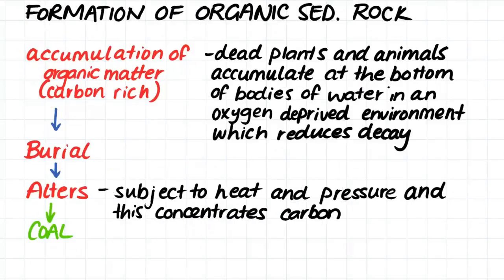Now to look at organic sedimentary rock. Organic sedimentary rock forms from the accumulation of organic matter, that is plants and animals. Dead plants and animals that would normally decay at the earth's surface, as they would be eaten away or rot, fall into bodies of water where there is limited oxygen. These limited oxygen environments actually slow down the decaying process. This means that we can have an accumulation of plant and animal matter at the bottom of bodies of water. This accumulated material is then buried and then altered as it is subjected to heat and pressure. This process is known to concentrate the carbon within the carbon rich organic matter, and it often produces something that we call coal.